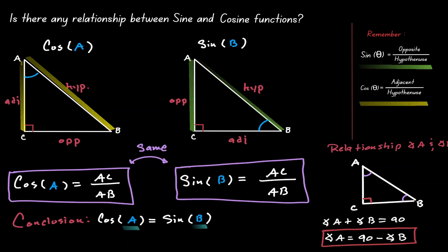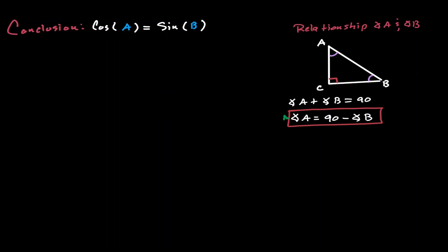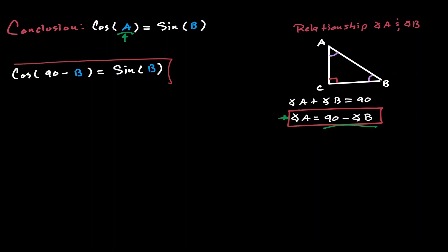Let's expand this idea further. Combining our two conclusions, if we take our expression for angle A and plug it in where we use angle A, we can say that the cosine of 90 minus angle B is equal to the sine of angle B. And here we have our first co-function identity.